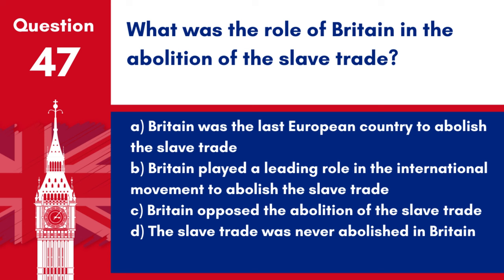Question 47: What was the role of Britain in the abolition of the slave trade? a. Britain was the last European country to abolish the slave trade. b. Britain played a leading role in the international movement to abolish the slave trade. c. Britain opposed the abolition of the slave trade. d. The slave trade was never abolished in Britain. Answer: b. The British government passed the Slave Trade Act in 1807, which made the trade in slaves illegal within the British Empire, and later took steps to enforce the ban globally.